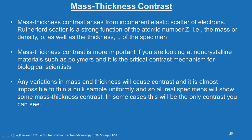First look at the initial remarks, then we will get into the discussion. Mass thickness contrast arises from incoherent elastic scattering of electrons. Rutherford scattering is a strong function of atomic number Z — that is the mass or density ρ — as well as the thickness t of the specimen. Mass thickness contrast is more important when looking at non-crystalline materials such as polymers and it is the critical contrast mechanism for biological scientists. Any variation in mass and thickness will cause contrast, and it is almost impossible to thin a bulk sample uniformly, so all real specimens will show some mass thickness contrast. In some cases this will be the only contrast you can see.